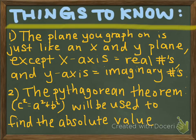Things to know: first, the plane you graph on is just like an x and y plane, except the x-axis represents real numbers and the y-axis represents imaginary numbers. Second, the Pythagorean theorem — c-squared equals a-squared plus b-squared — will be used to find the absolute value.